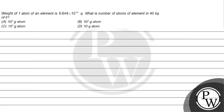Hello children, let's read this question. The question says: weight of one atom of an element is 6.644 into 10 raised to the power minus 23 gram. What is the number of atoms of the element in 40 kg of it?